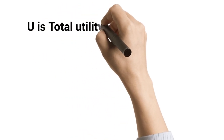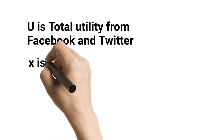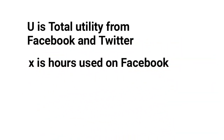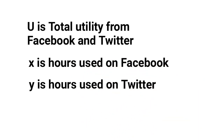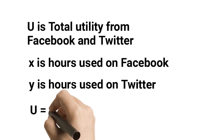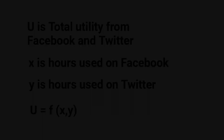If u is the total utility derived from using Facebook and Twitter, x be the hours spent on Facebook, and y be the hours spent on Twitter in a day, then mathematically u is equal to f(x, y) — that is, total utility is a function of the hours spent on Facebook and Twitter. So now you know that your satisfaction level can be expressed mathematically by using the concepts of numbers, set theory, and functions. Stay tuned for more applications.